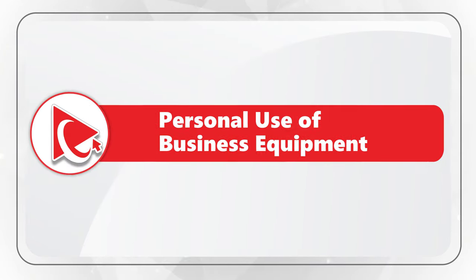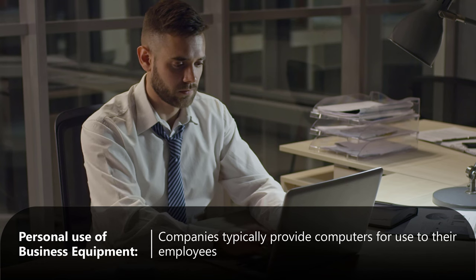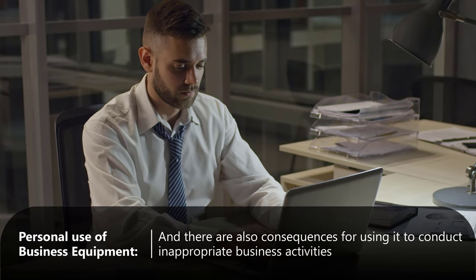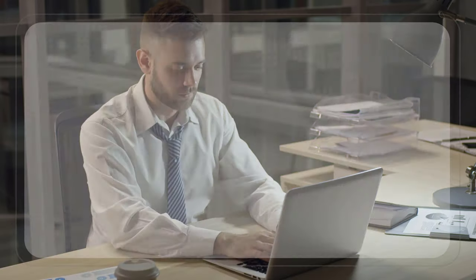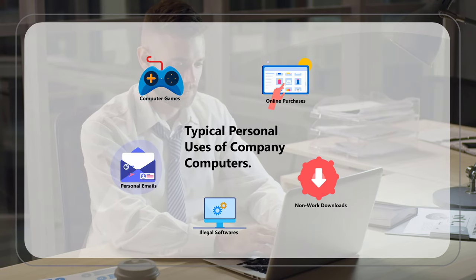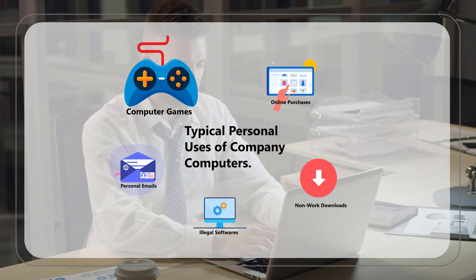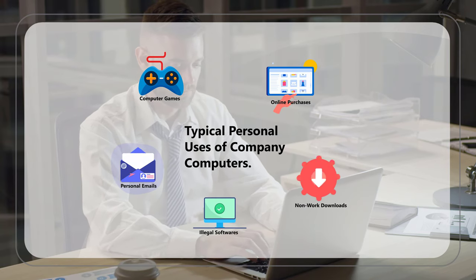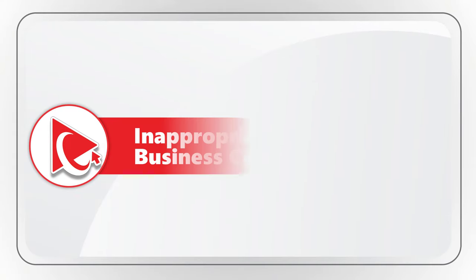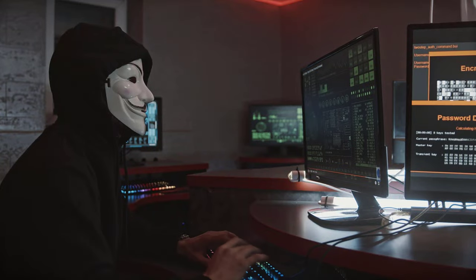Companies typically provide computers for employee use, but there are challenges with personal use of business equipment and consequences for inappropriate activities. The five main categories of typical personal use include: making online purchases, sending personal email, playing games, downloading non-work related materials, and downloading and installing non-work related software. There are typically special policies for inappropriate content on business computers.